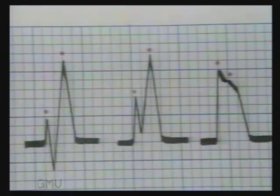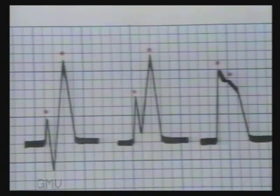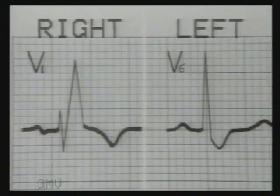Now let us learn to differentiate between right and left bundle branch blocks. When the QRS complexes are noted to be wide, first look for a positive wide and slurred M-shaped pattern, that is RSR' or RR' pattern, in the chest leads. If it is seen over the right chest leads, that is in V1 or V2, it is a right bundle branch block.